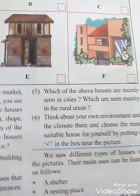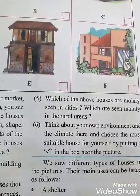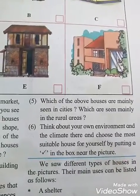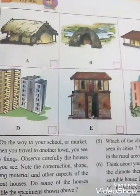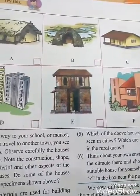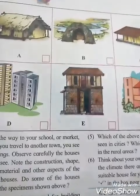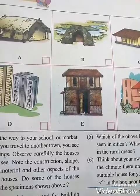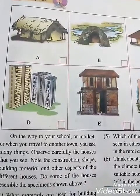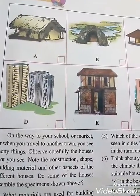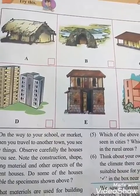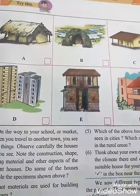The next question is: which of the above houses are mainly seen in cities and which are seen mainly in rural areas? Six pictures A, B, C, D, E, F are shown. Houses D, E, and F are mainly seen in cities. Houses A, B, and C are mainly seen in rural areas — that is, in the village.